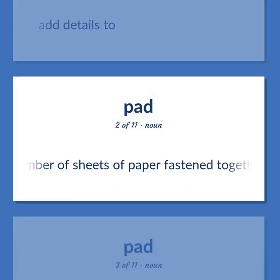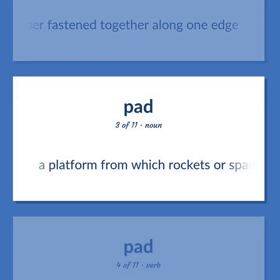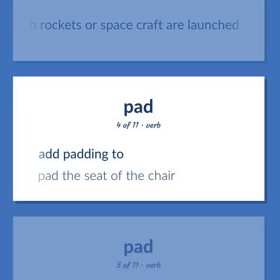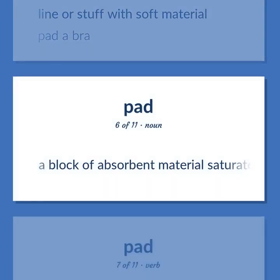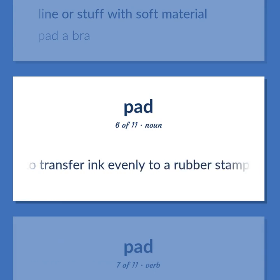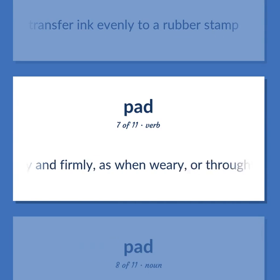Pad: a number of sheets of paper fastened together along one edge. A platform from which rockets or spacecraft are launched. Add padding to. Pad the seat of the chair. Line or stuff with soft material. Pad a bra. A block of absorbent material saturated with ink, used to transfer ink evenly to a rubber stamp. Walk heavily and firmly, as when weary, or through mud.